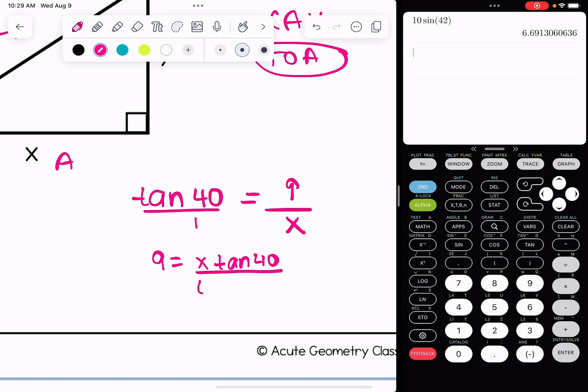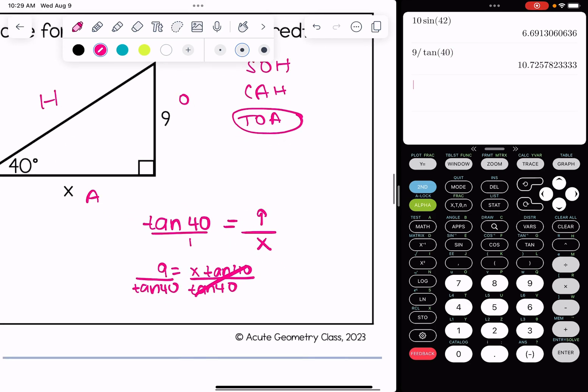So 9 divided by tangent 40, and we're looking to round to the nearest hundredth. I have x equals 10.73 as our answer for number two.